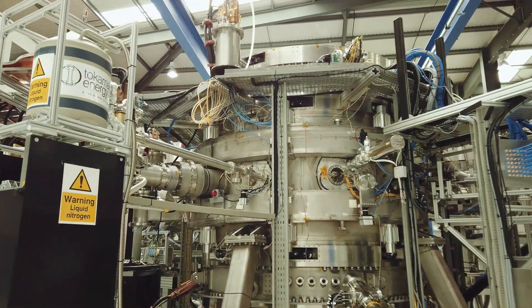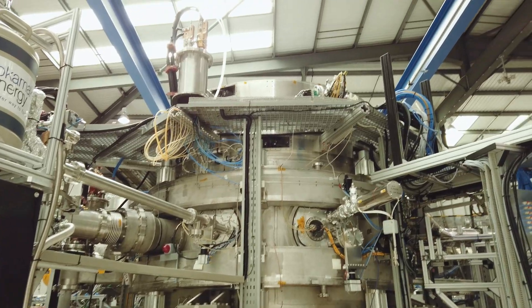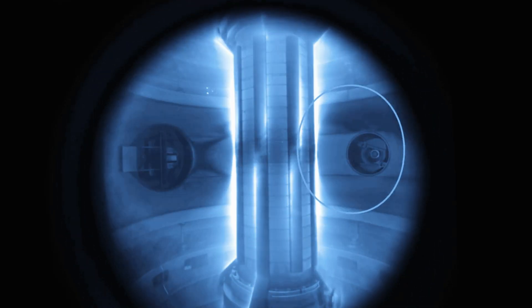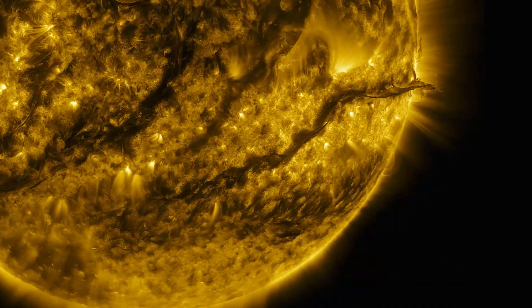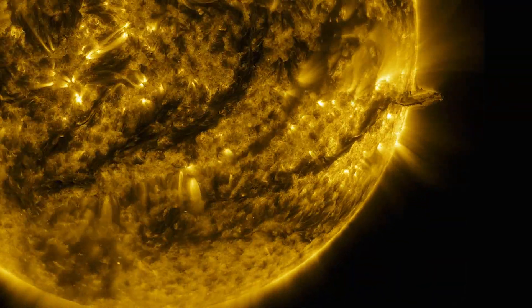A tokamak is the most advanced of current fusion machine designs. In order to get fusion reactions going, you need to keep your fuel hot enough and dense enough, like the center of a star, and you need to keep it like that for long enough for fusion reactions to occur. People have tried and are trying various different ways of doing this.